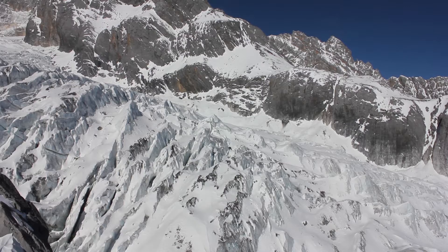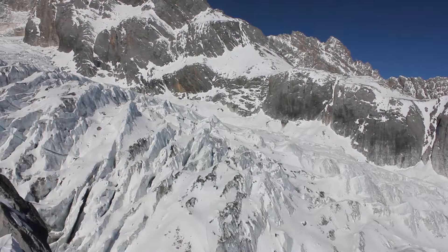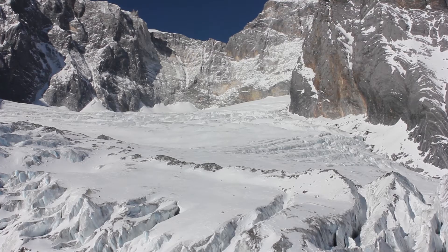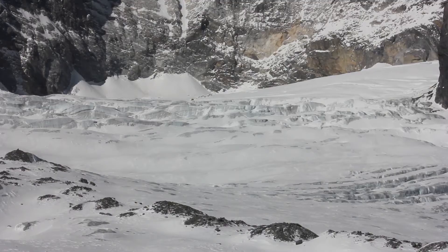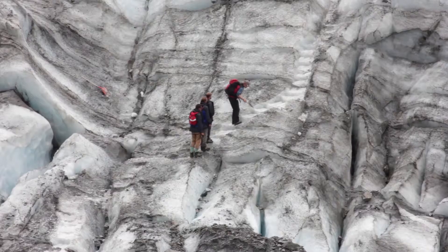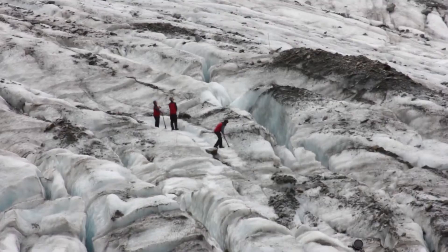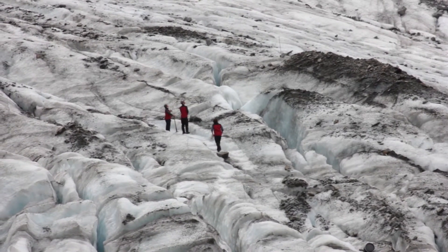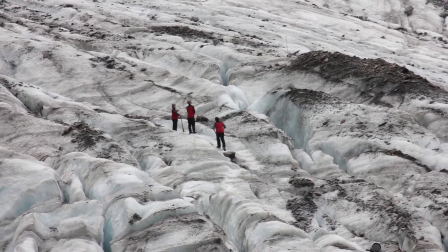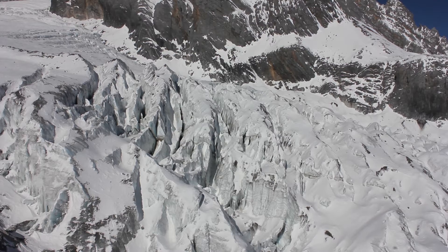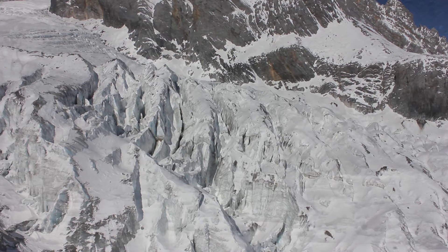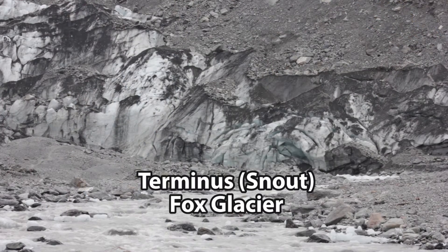Glaciers have several components. The area where the snow falls is usually the part of the glacier with the highest elevation, and is called the zone of accumulation. Further down the glacier is the zone of ablation, where most of the melting and evaporation occurs. Here the ice shows a lot of crevasses.